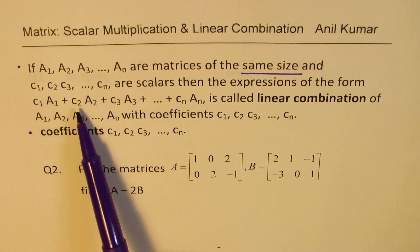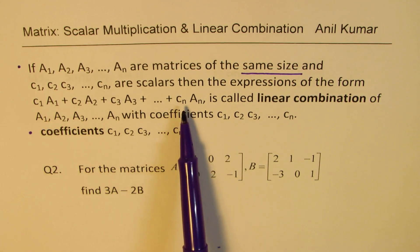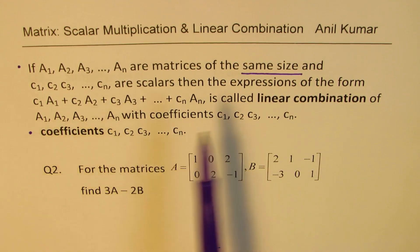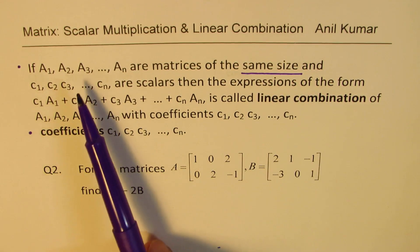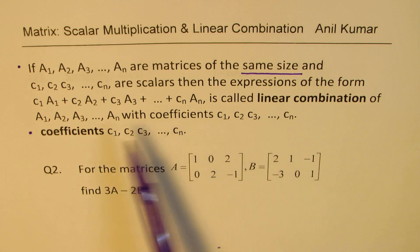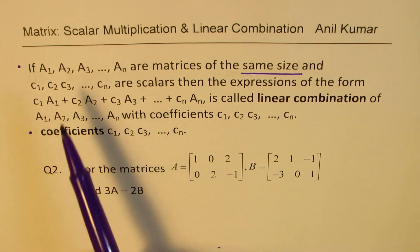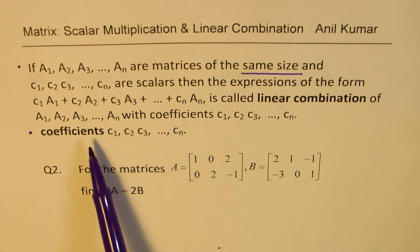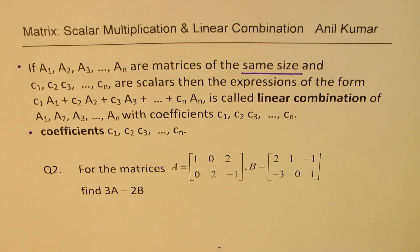So this is called the linear combination where of course A's are your matrices and C's are your coefficients. So at times we'll just say coefficients of this matrix, so those multiples, scalar multiples, are the coefficients. Let's take up an example.